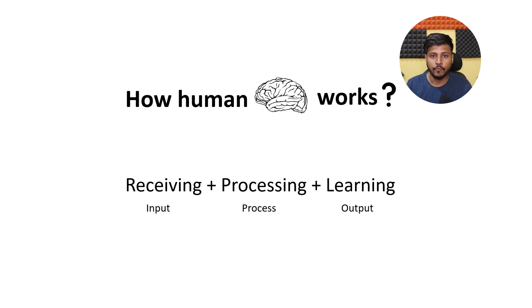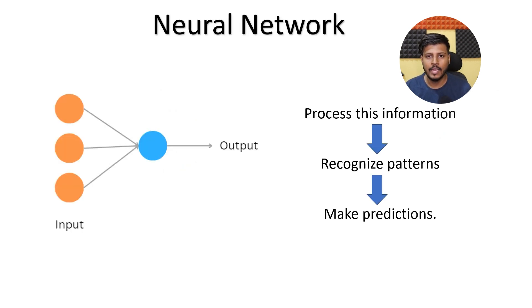This process of receiving, processing and learning is exactly how the human brain works. Now imagine we have a Neural Network, which is a computer system inspired by our human brain. We will provide this Neural Network with similar input just like your eyes and ears provide input to your brain.